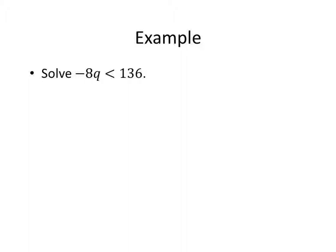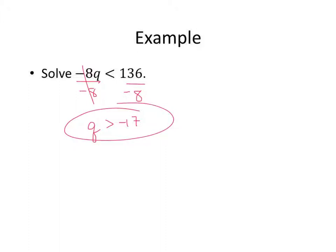Negative 8Q less than 136 — what do you do to get Q by itself? We divide both sides by negative 8. This time we did divide by a negative, so we reverse our inequality, making it greater than, and that gives us Q is greater than negative 17.